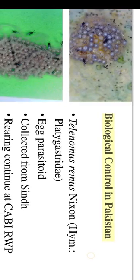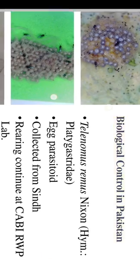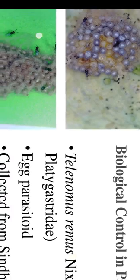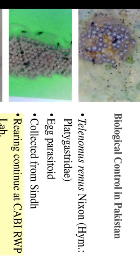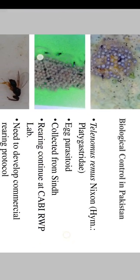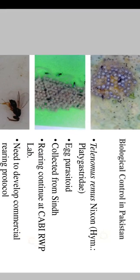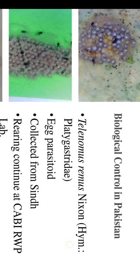Biological control in Pakistan: Telenomus remus Nixon (Hymenoptera: Platygastridae) — egg parasitoid collected from Sindh. Rearing is continuing at CABIRWP lab. There is need to develop a commercial rearing protocol.